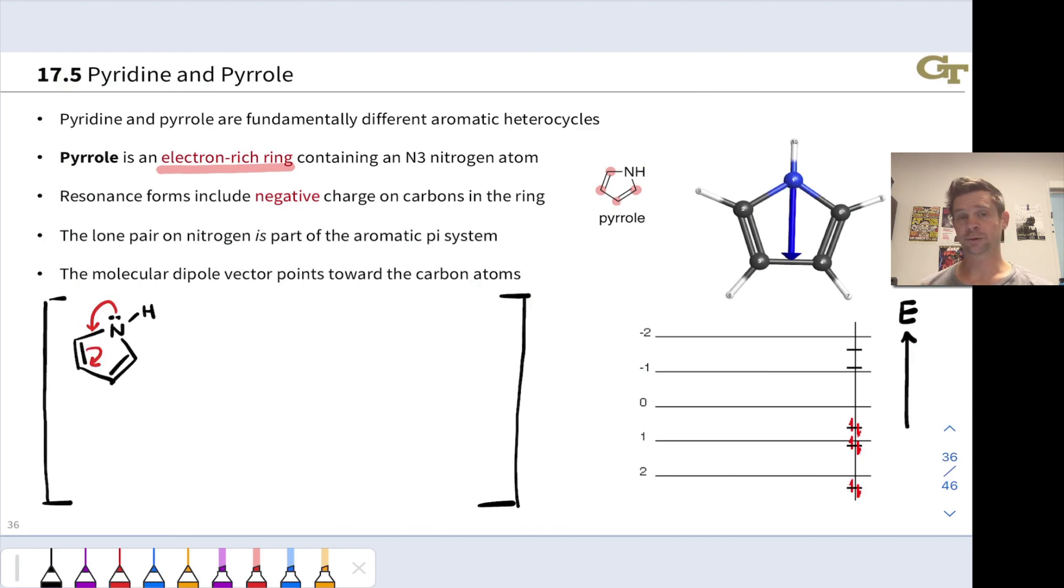we could flow electrons like this to generate an alternative resonance form of pyrrole with positive charge on the N3 nitrogen and negative charge on the carbon right here. In fact, we can continue pushing this negative charge along by taking this pair of electrons and sending it into a double bond and pushing these electrons onto this carbon. That generates another resonance form that looks like this with negative charge on a different carbon, and in fact,